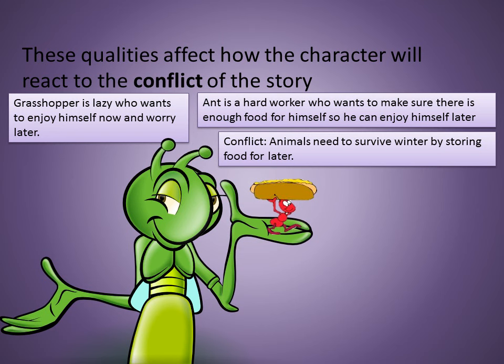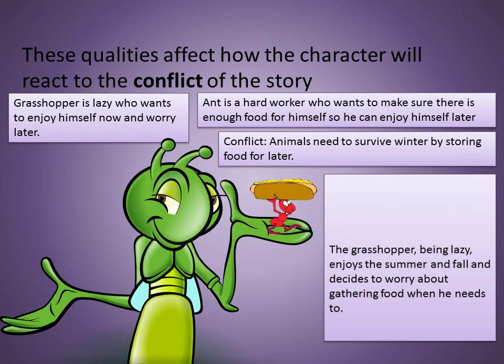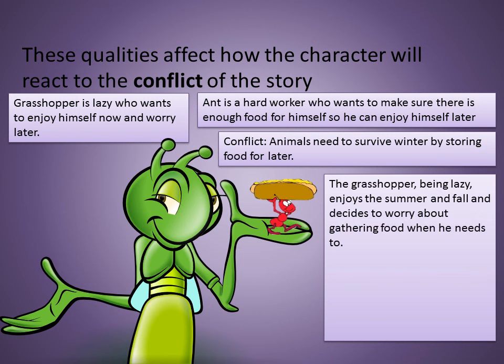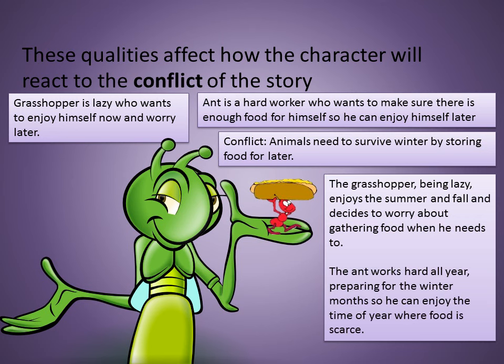So how do these two different characters react to the same problem? Well, the grasshopper, being lazy, enjoys the summer and fall and decides to worry about gathering food when he needs to. The ant, on the other hand, works hard all year preparing for the winter months so he can enjoy the time of year where food is scarce.